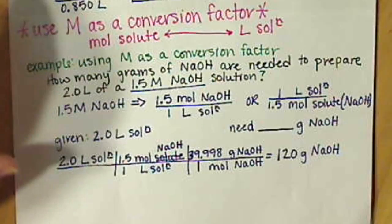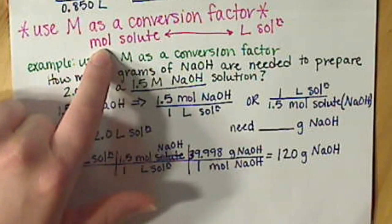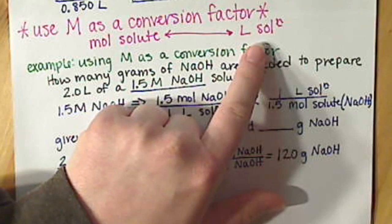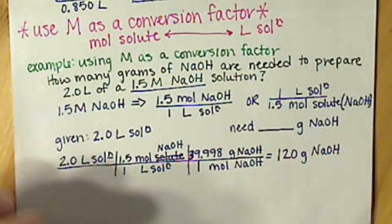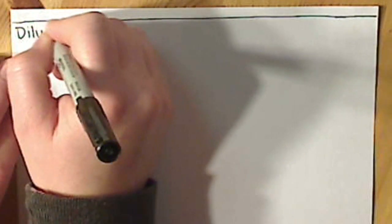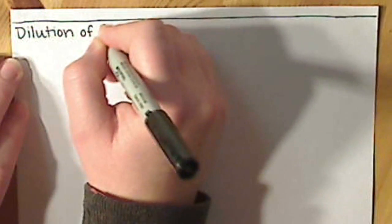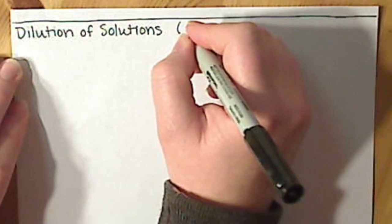The second way to use molarity is to use it as a conversion factor, which allows us to convert between moles of our solute and liters of our solution. In this video, we're going to talk about the third way to use molarity, and that is as a dilution equation. So dilution of solutions, section 8.5.